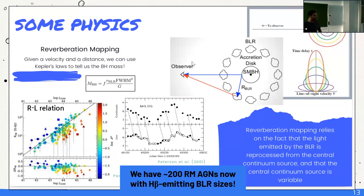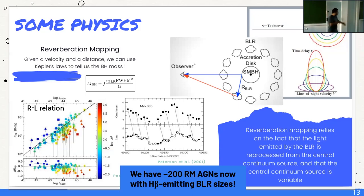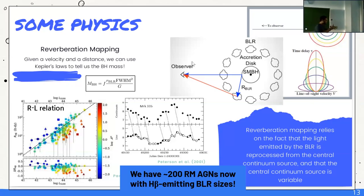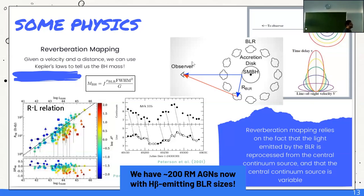To clarify: the light involved in reverberation mapping is the reprocessed line emission, not the continuum photon itself. The continuum photon from the accretion disk gets photo-ionized by the BLR, producing a line photon; it is this line emission — the reprocessed light — that we observe and whose time delay we measure. The scattered emission also shows line modulation because of this reprocessing.